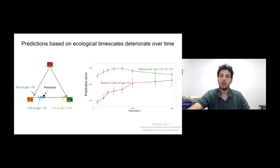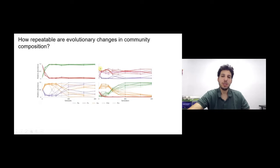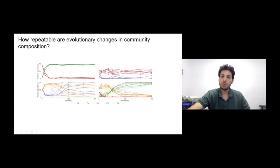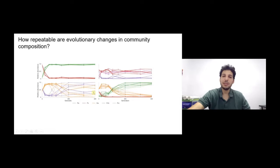Next we want to know how repeatable these changes are. In cases where composition doesn't change, things are fairly repeatable with some variation accumulating. But the same is true for cases that do change — for example, in one trio the green species increases during co-evolution, and all the different lines showing different replicates are fairly tight. In this pair there's more variability, but it's always the purple species that increases in abundance during co-evolution — by various amounts, but always the purple one.